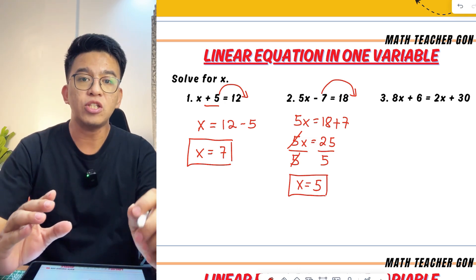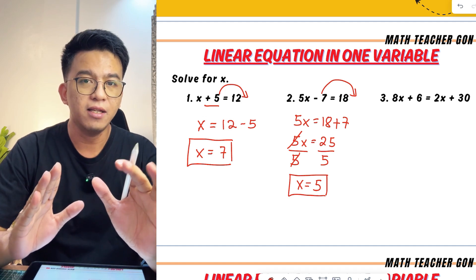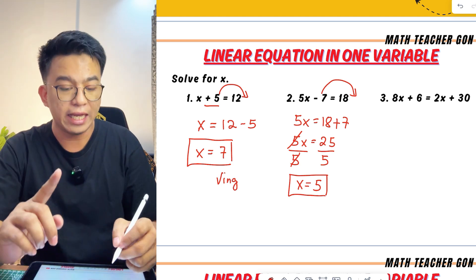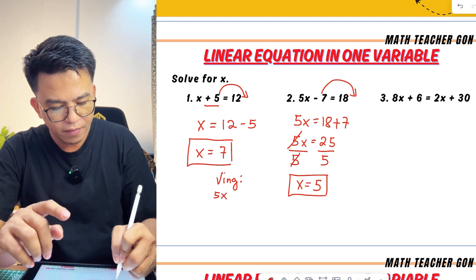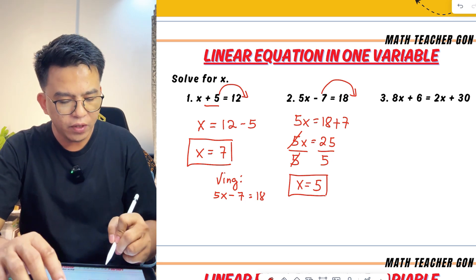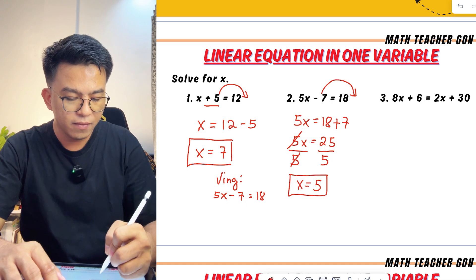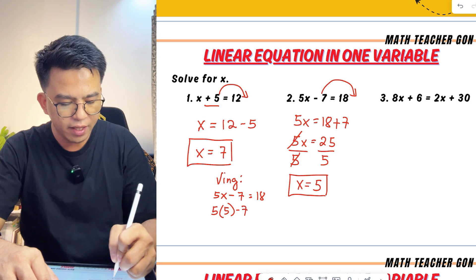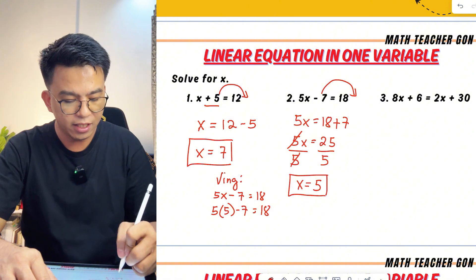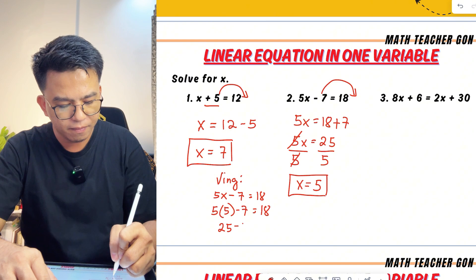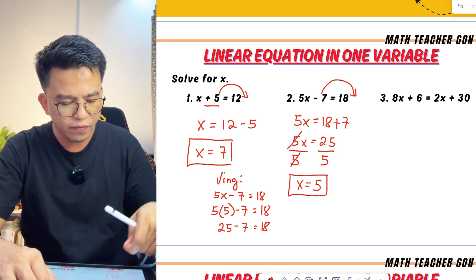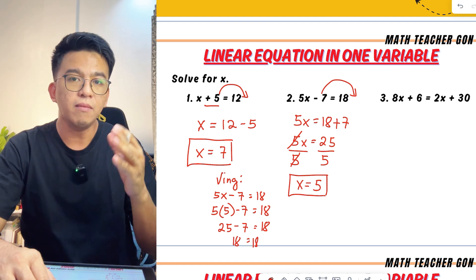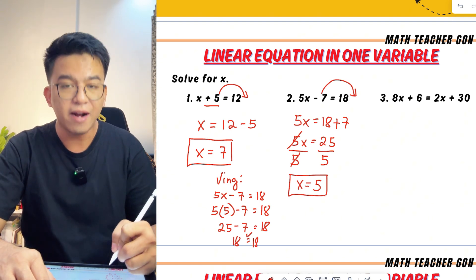Now, if you want to check whether the answer is correct, here is how it works. We will try it with the second equation. Copy first the given, which is 5x minus 7 is equal to 18. You can substitute the value of x, which is 5, into the original equation. So we have 5 times 5 minus 7 is equal to 18. What is 5 times 5? The answer is 25. Then minus 7, which gives 18. On the left side, 25 minus 7 is 18. Since both sides of the equation are equal, our answer is correct.